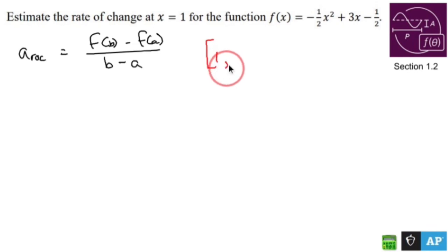like how about 1 and 1.0001. See, that's not going to give us the actual exact rate of change at 1, but it's going to give us the average between 1 and 1.0001, which last time I checked, 1 and 1.0001 is awfully close to each other. So that's how we're going to handle this.